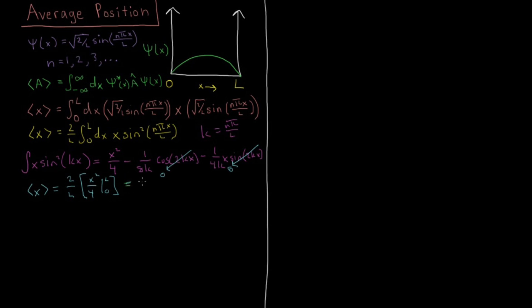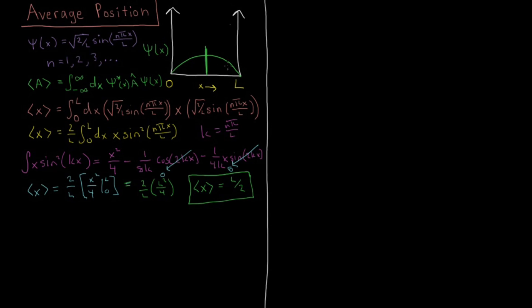This equals 2 over L times L squared over 4, so our final value is that the average value of X equals L over 2. The average position of the particle is always right in the middle of the box. That makes sense because psi star psi is the probability of where the particle will be, and for any value of N you have an equal amount of that function on the left side and the right side. The average position is always in the middle, which holds for any symmetric potential where the potential energy function is symmetric relative to L over 2.